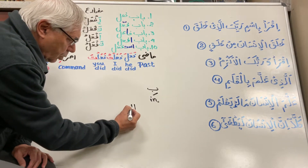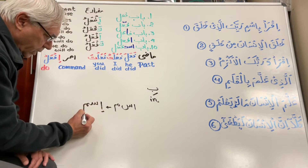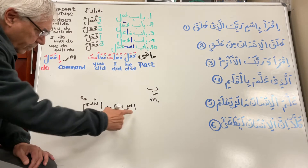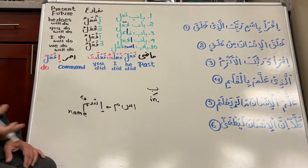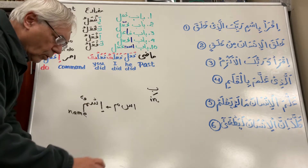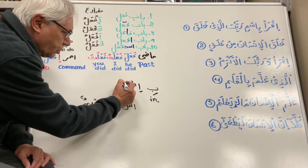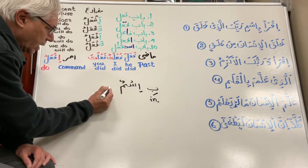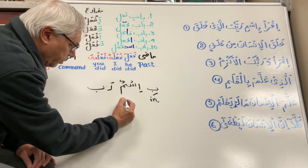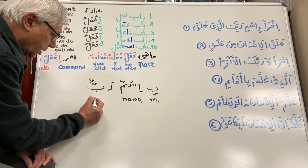The next word: alif, sin, mim are the root letters. If we make a noun it is ismun. Ismun is a noun meaning 'name.' Alif, sin, mim means to name something or give a name, but when combined this way and pronounced ismun, always with pesh at the end, this is a noun. The third word is rabbun — rab, meaning Lord, God, Provider, or Sustainer. Then the last letter ka is a pronoun used with a zabar meaning 'you,' one person. It is an attached pronoun — it attaches with the previous word.